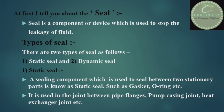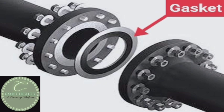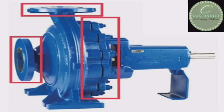A sealing component which is used to seal between two stationary parts is known as a static seal — such as a gasket or O-ring. It is used in the joint between pipe flanges, pump casing joint, heat exchanger joint, etc.